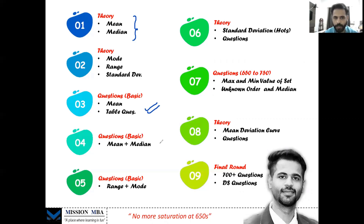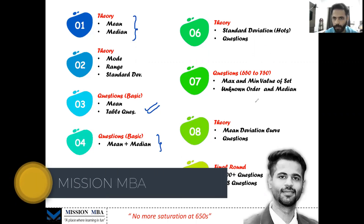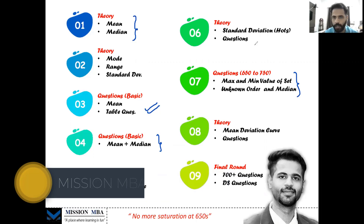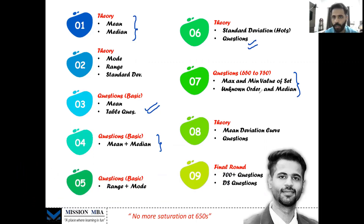Jumping to difficult questions drops our confidence and it feels like we haven't understood. So first the basic questions, then slowly increase the level somewhere around 650 to 700 with problem solving questions. Then analyze what are the hot topics for the current years in which you are practicing — some particular topics tend to repeat, and you have to study them separately once again in very depth.